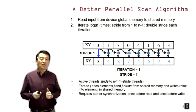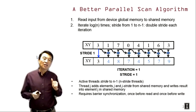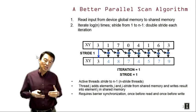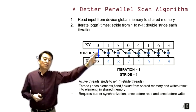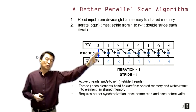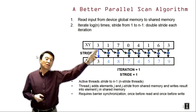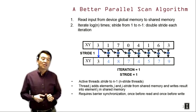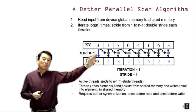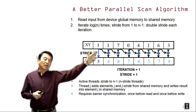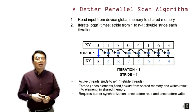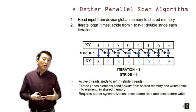Thread j adds element j and element j minus stride from the shared memory, and writes the result into element j in the shared memory. So every thread takes its own position j, reads the value from position j minus stride as the other operand, and writes the result back to position j. For example, thread one takes element one, adds it to element one minus one which is element zero, and writes into element one. This requires barrier synchronization.